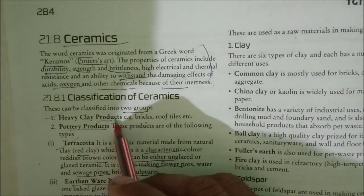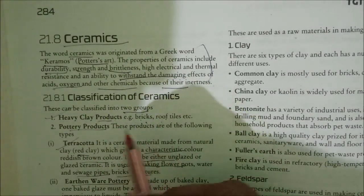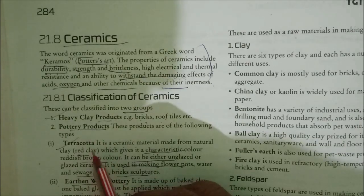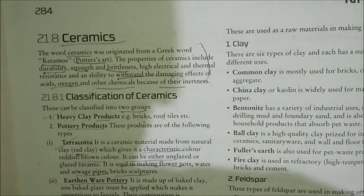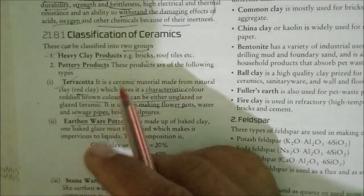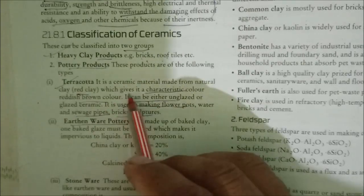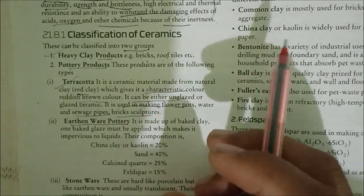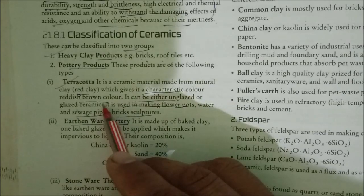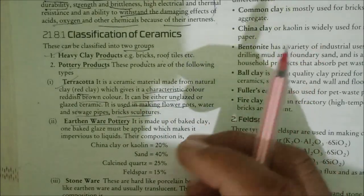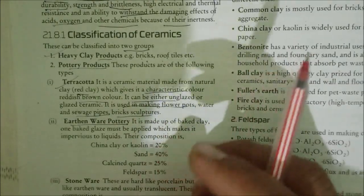We have heavy clay products like bricks and roof tiles. There are pottery products such as terracotta, which is a ceramic material made from natural red clay that gives it a characteristic reddish-brown color. It can be either unglazed or glazed ceramic and is used in making flower pots, water and sewage pipes, bricks, and sculptures.